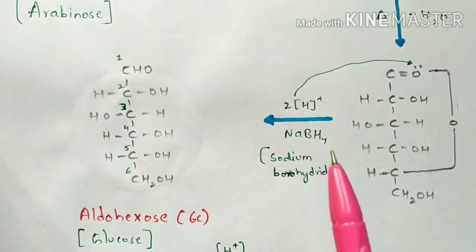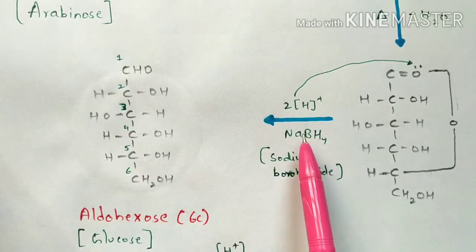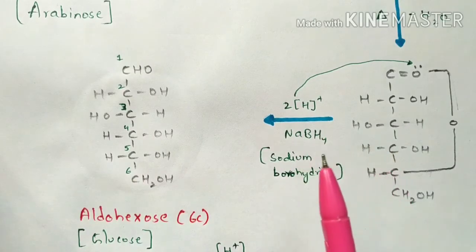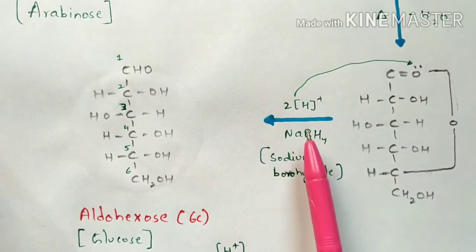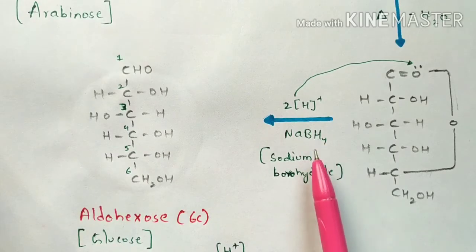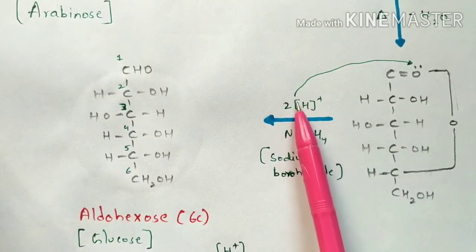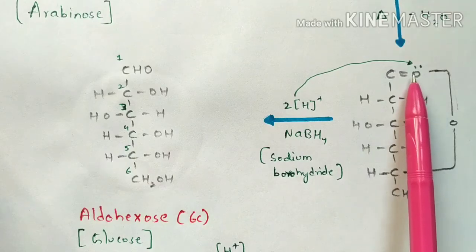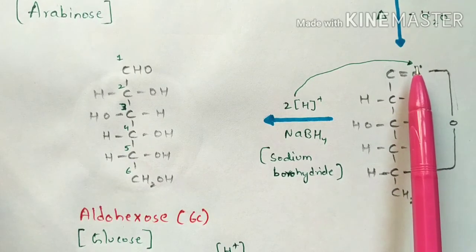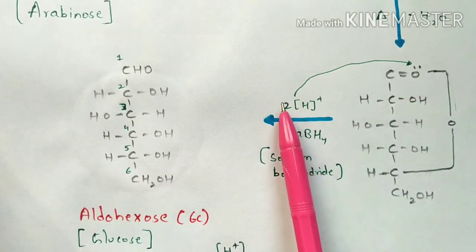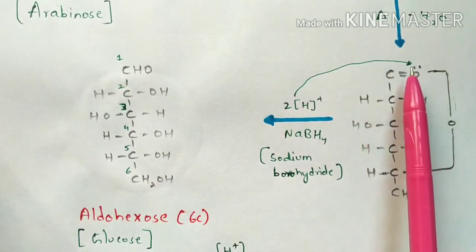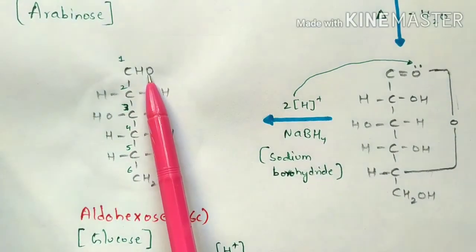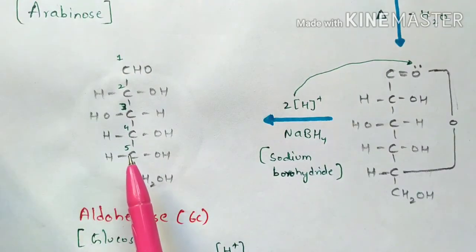This Fischer projection then undergoes reduction using NaBH₄ (sodium borohydride), which is used as a catalyst to speed up the reaction. During reduction, protons are used — one of the protons gets attached to the oxygen atom, which contains a lone pair of electrons (negative charge). This forms the aldehyde group (CHO) at the first carbon, while the remaining projections stay the same.